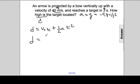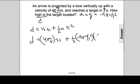The displacement equals the initial speed—that's 40 meters per second—times the time, three seconds, plus one-half times the acceleration, which is negative 9.8 meters per second squared, times the square of the time, three seconds squared.